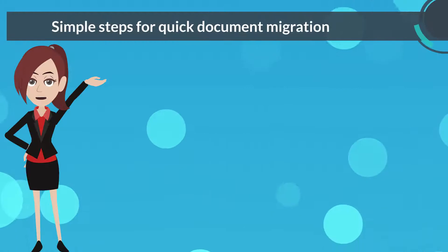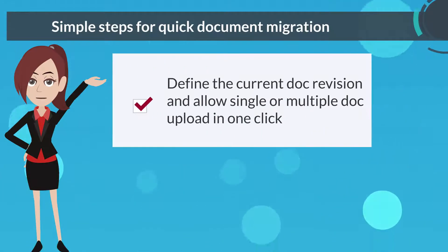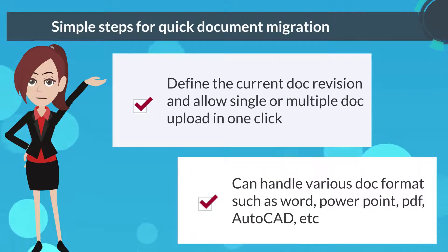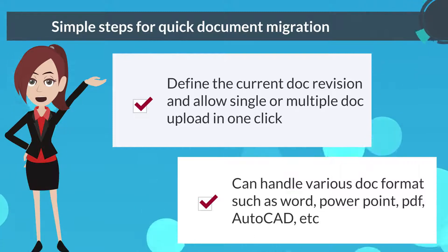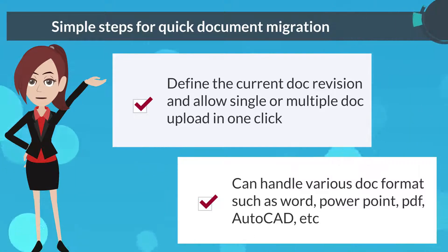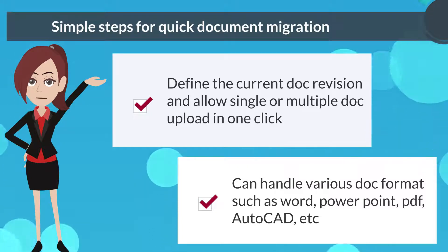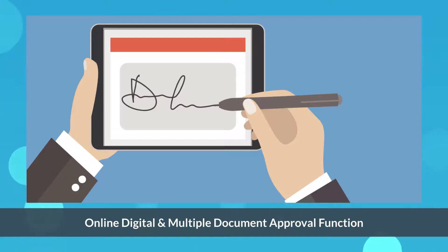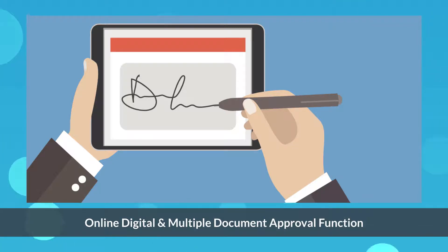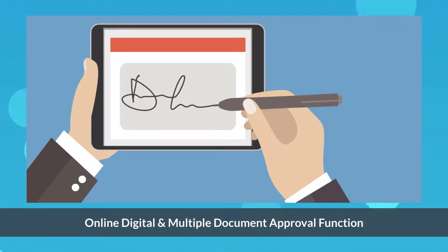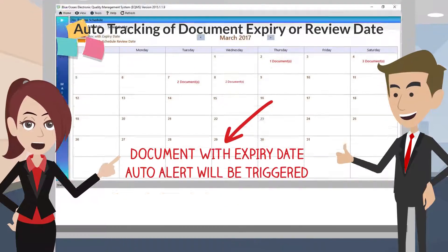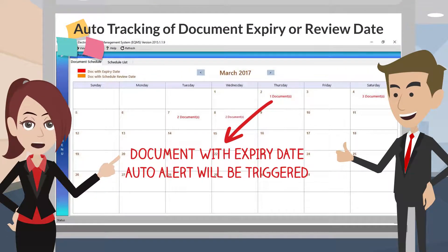The document initial upload function provides users with a flexible and simple way for quick initial setup. It allows multiple documents to be uploaded in various formats at once. Smart DMS provides a powerful function for online review and approval of documents through electronic devices, helping users free up time for more valuable work. It also has the capability to keep track of documents going to expiry by showing alerts in the document review calendar.